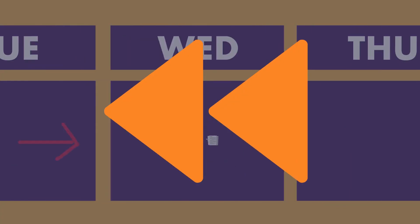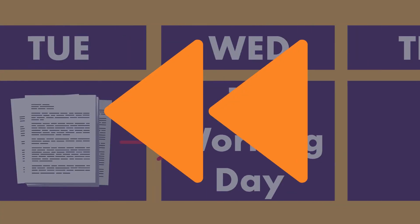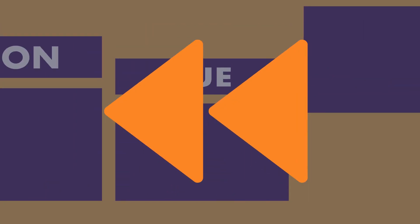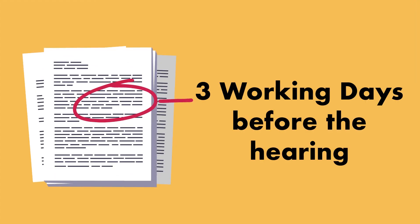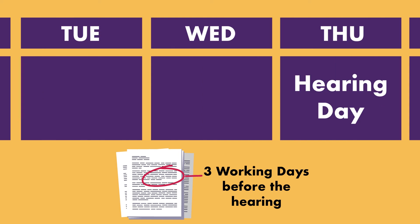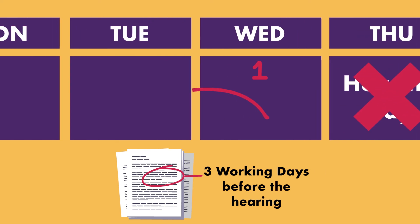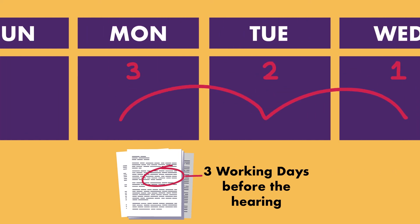You can use the same process if you need to count backwards from an event. For example, if the court requires you to file a document three working days before the hearing, and the hearing is on a Thursday, you don't count the day of the hearing, so you must file your documents on the Monday.